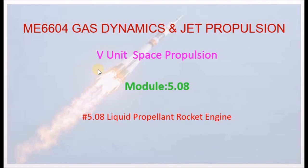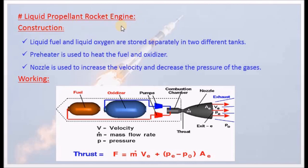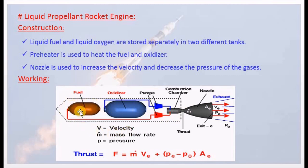We are going to study the construction of the liquid propellant rocket engine. The construction is shown in a diagram. This is a NASA American Aeronautical diagram. It includes the thrust formula, calculations, variables, and line diagram with labels.